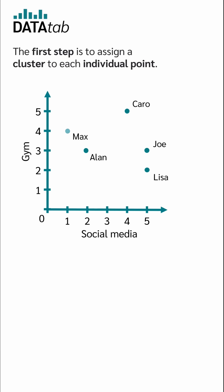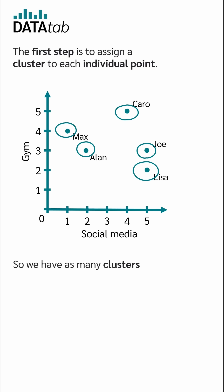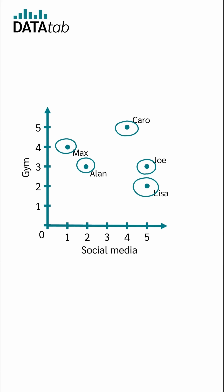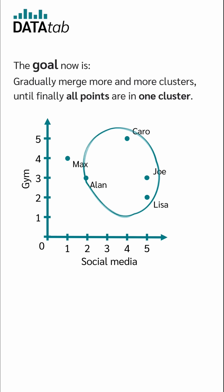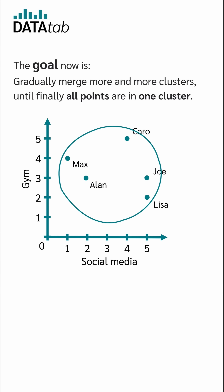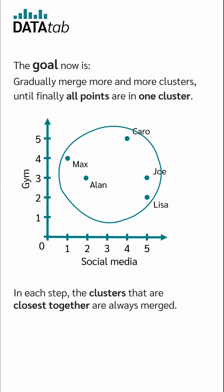The first step is to assign a cluster to each individual point, so we have as many clusters as we have people. The goal now is to gradually merge more and more clusters until finally all points are in one cluster. In each step, the clusters that are closest together are always merged.